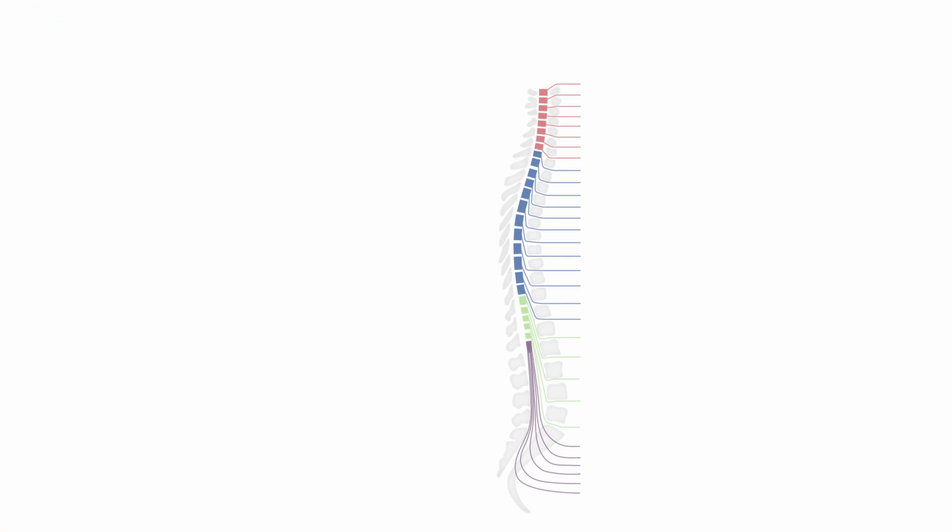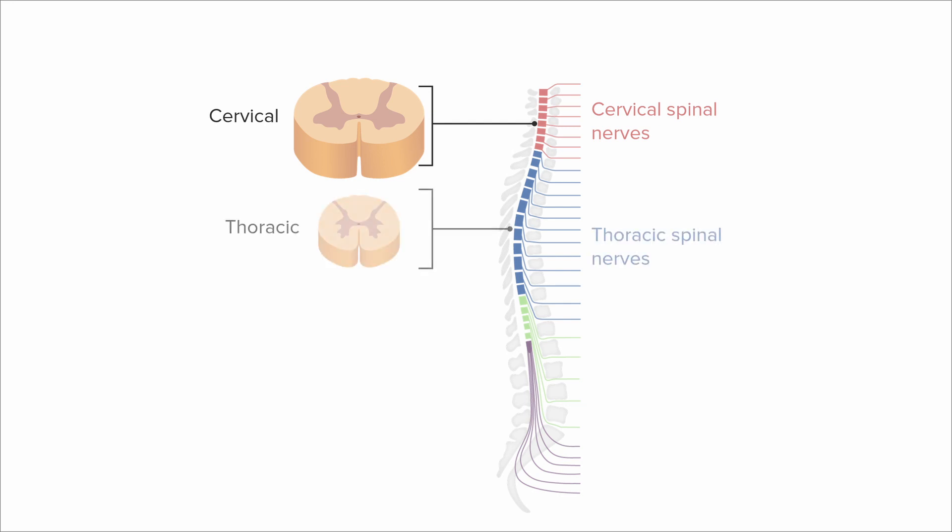So in the area of the cervical vertebra, we have the cervical part. In the area of the thoracic vertebra, we have the thoracic part.